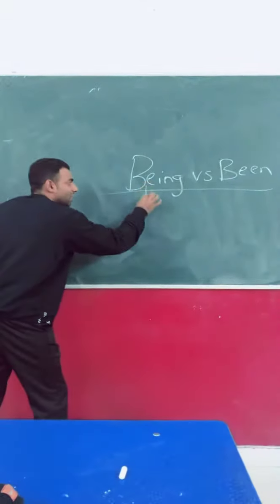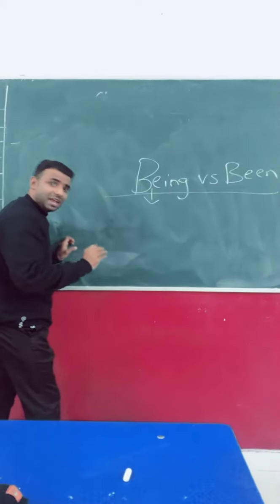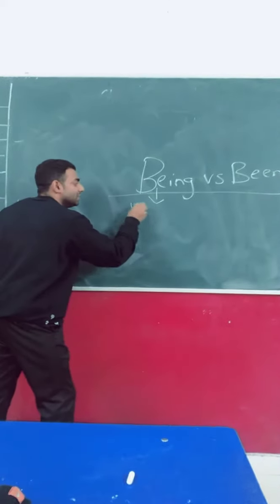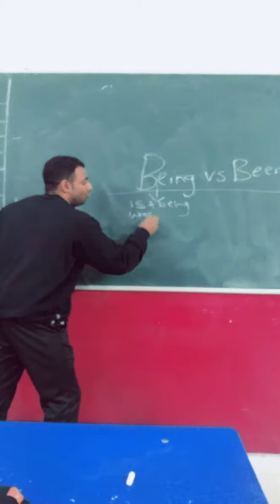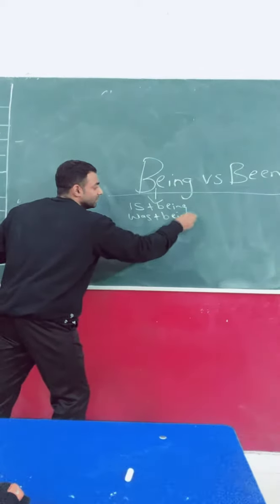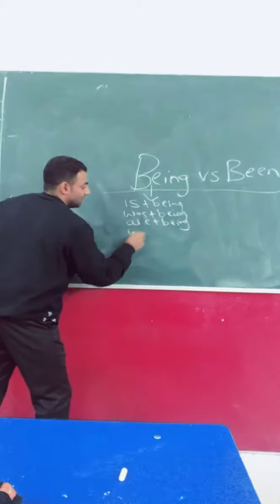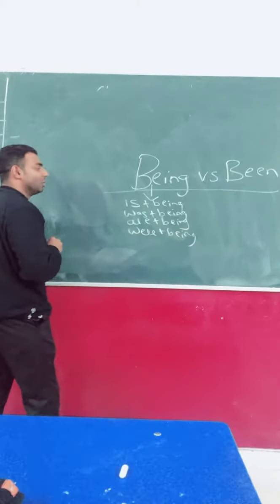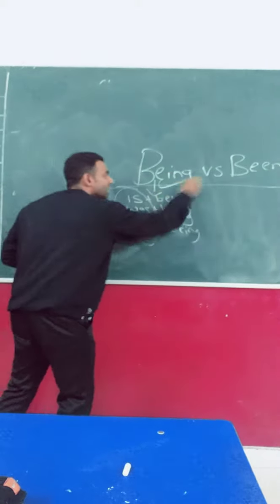First of all the word being is only used in passive voice. For example is plus being, was plus being, are plus being and were plus being. We can only use the following helping verbs with the word being.